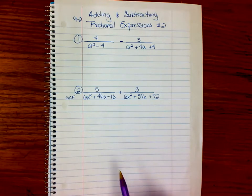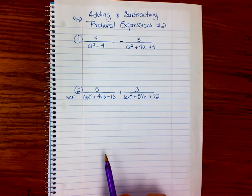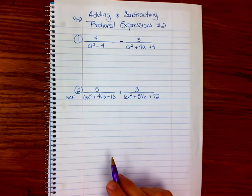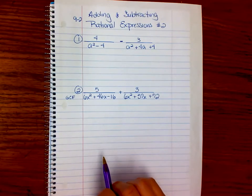Notice that there are binomials and trinomials in the denominators. And it's important to notice, because whenever you have that, you have to think factoring. I'm going to have to factor in order to find a common denominator. So remember your rules for factoring.